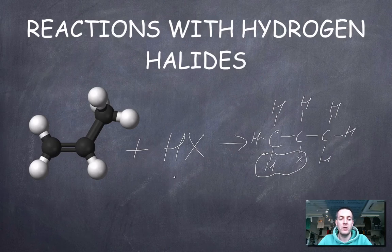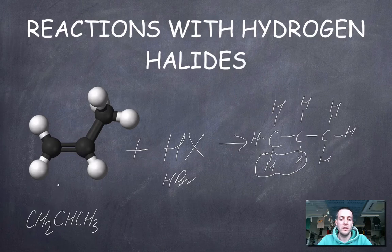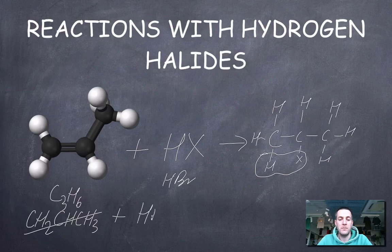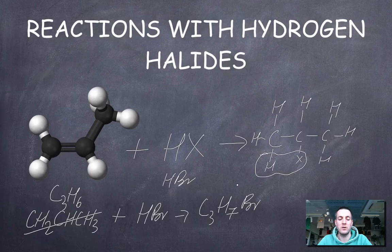As for writing an equation, well, let's say this had been HBR. Then that's really quite simple again. That would be CH2CHCH3 or just simply C3H6. So let's cross that one out and keep it simple. Plus HBR makes C3H7BR. So again, an addition reaction. Just opening up the double bond and putting in the new atoms.